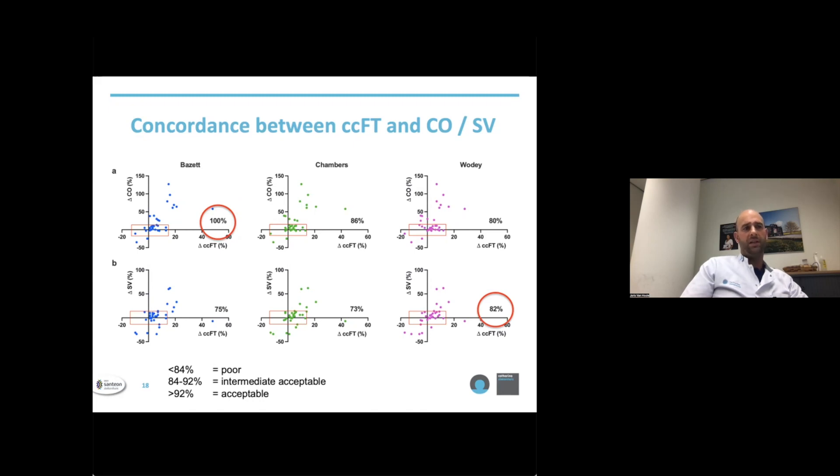If this level is less than 84%, then the concordance is only poor. If those data points are within these two quadrants between 84% and 92%, concordance is intermediate. Above 92%, concordance is acceptable.